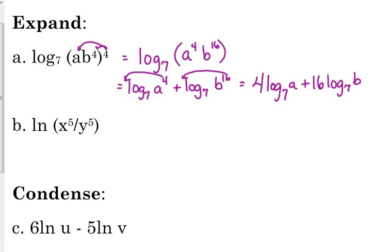So, the first thing that I see here is I see a quotient. So, that is the natural log of x to the 5th minus the natural log of y to the 5th, and then we need to move those exponents. So, 5 natural log of x minus 5 natural log of y.